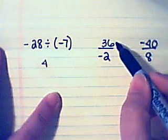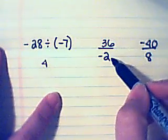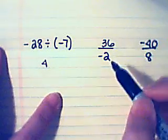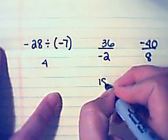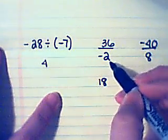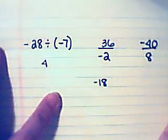Here I have positive thirty-six divided by negative two. Thirty-six divided by two is eighteen. Since one of my numbers is negative, my answer is negative.